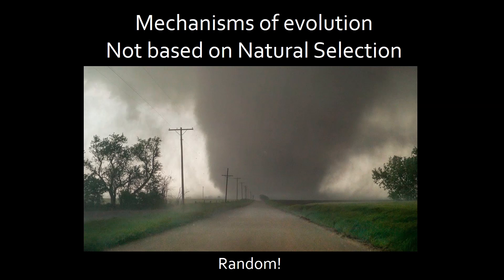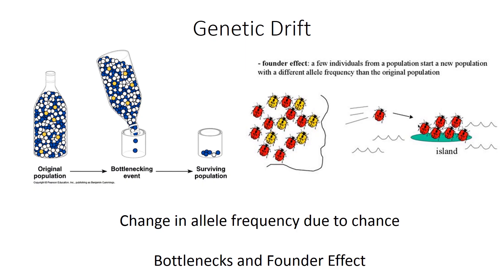We all know that natural selection causes adaptive evolution, however there are ways that populations can evolve that are not based on natural selection — and in fact they can be quite random. The first one is called genetic drift. Genetic drift is a change in allele frequency due to chance, and this could be through bottlenecks, founder effects, or any way that you go from a large population to a small population. The founder effect is when a few individuals from a larger population start a new population with a different allele frequency than the original.